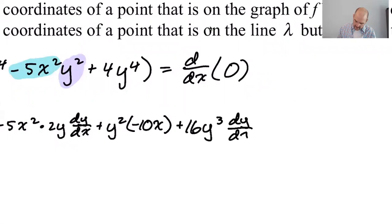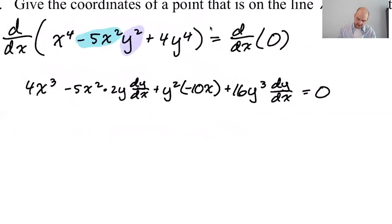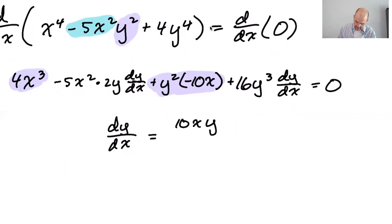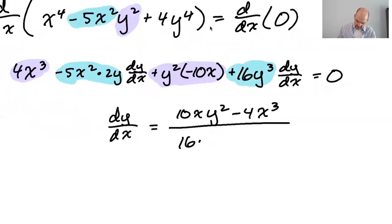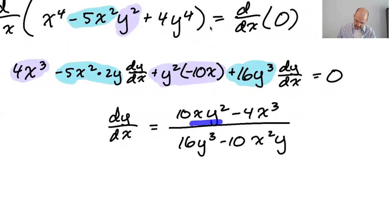Then plus 16y cubed dy/dx equals zero. Everything that doesn't have a dy/dx goes to the other side, and everything with a dy/dx gets factored out and divided by the coefficient. So dy/dx equals 10xy squared minus 4x cubed, all over 16y cubed minus 10x squared y. There's nothing that simplifies further — x, y terms don't reduce — so I think this is the final answer.